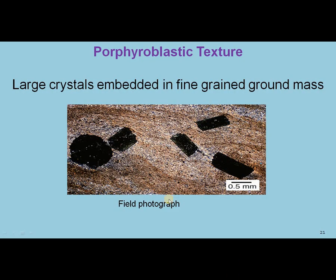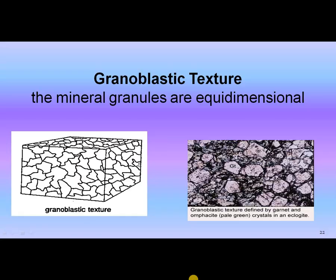Porphyroblastic texture. That means large crystals — phenocrysts — these minerals are embedded in the fine-grained matrix. That means fine-grained matrix consists of many minerals in which the large crystals or phenocrysts are embedded, so that the rock is exhibiting porphyroblastic texture.